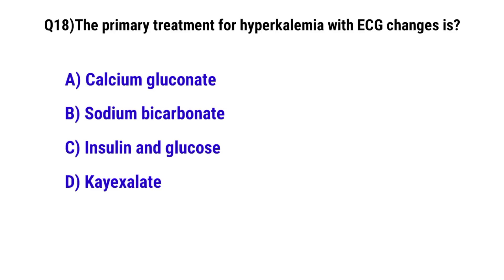Question No. 18: The primary treatment for hyperkalemia with ECG changes is — the correct option is A: calcium gluconate.